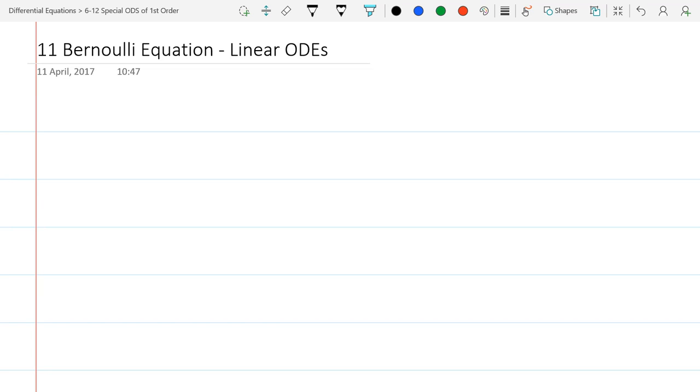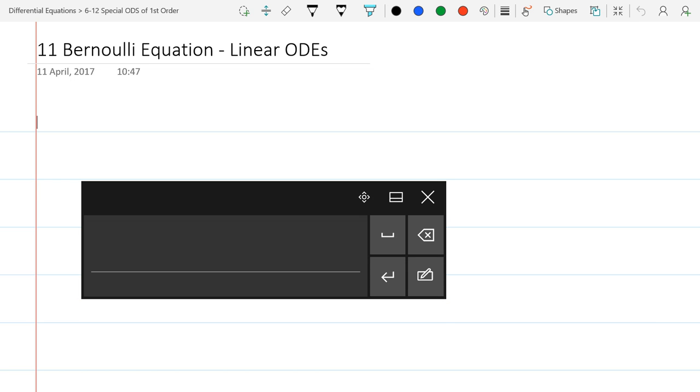So before, we used linear to talk about just the coefficient functions. And now we're going to talk about what is a linear ODE of first order. It's unfortunate that the word linear is used in similar ways but means different things.